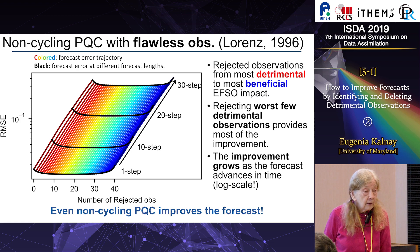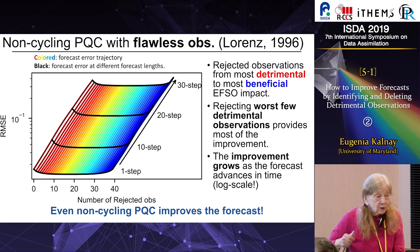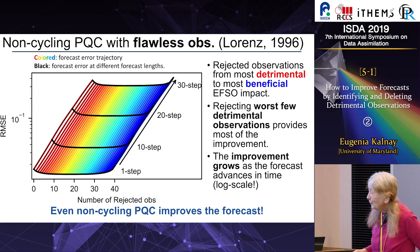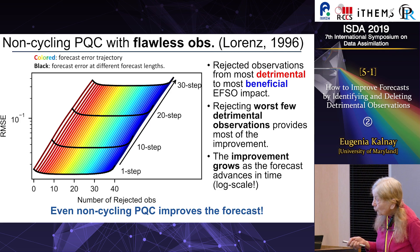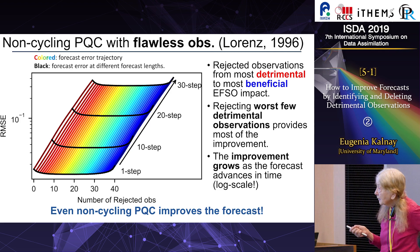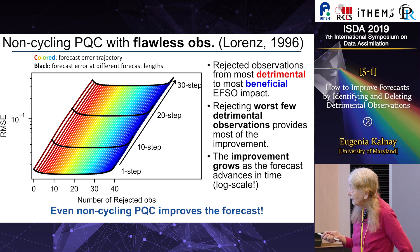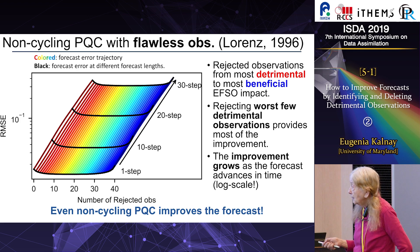When we say 'perfect,' we mean there is no instrument failure — the observation error is Gaussian and you know exactly what the state is. If you drop the first 10 most detrimental observations, you get a much more accurate forecast. Rejecting the worst few detrimental observations provides most of the improvement, and the improvement grows with time because errors grow exponentially. Even non-cycling PQC improves the forecast.